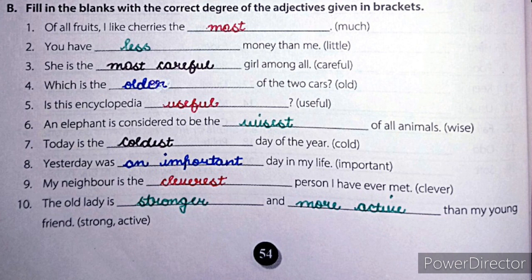Now we will do the practice book, exercise B, worksheet 45, page number 54. The question is: fill in the blanks with the correct degree of the adjectives given in brackets. Number 1: of all fruits, I like cherries the most.